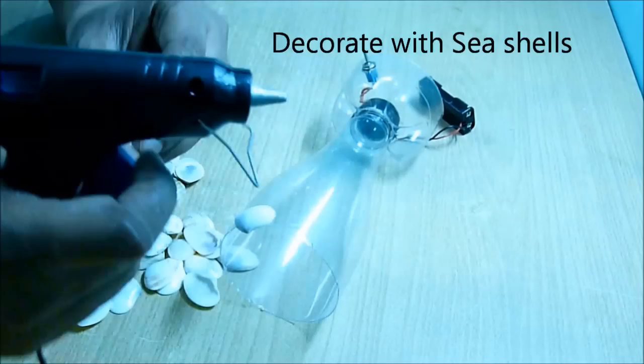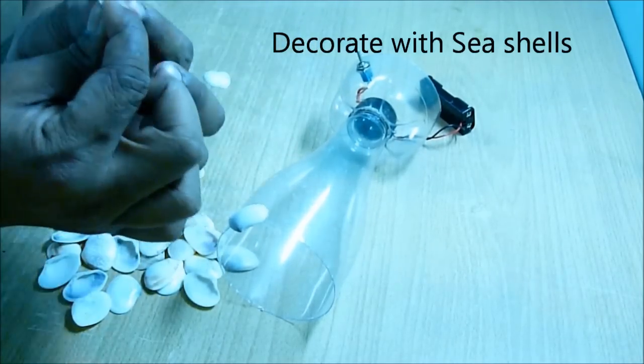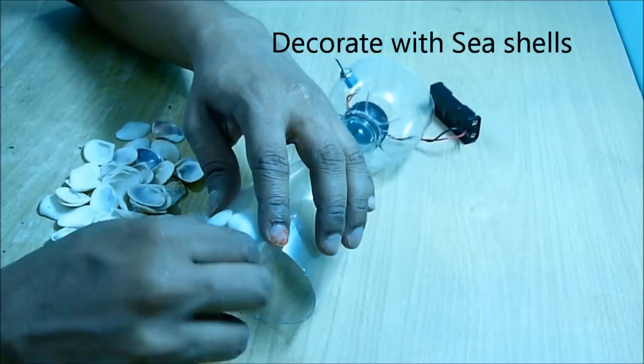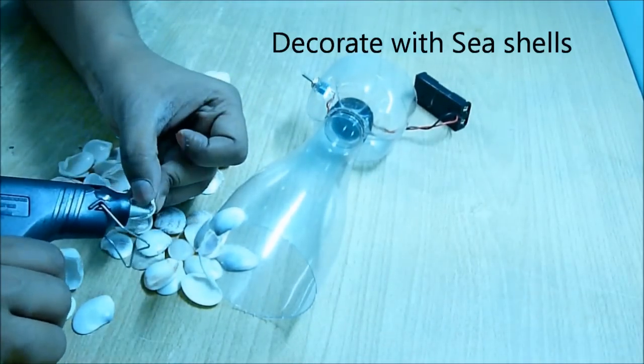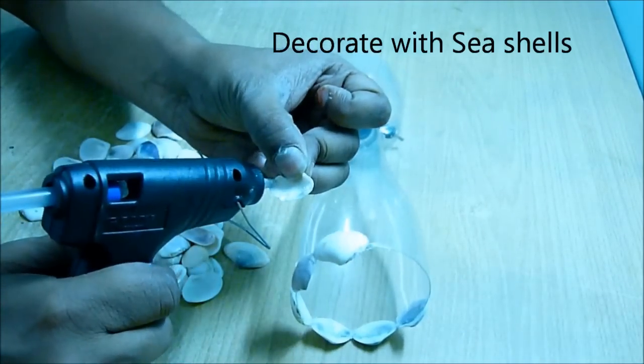We are going to decorate this vase using seashells. We will glue seashells all around the top to have a nice look on the top edge.